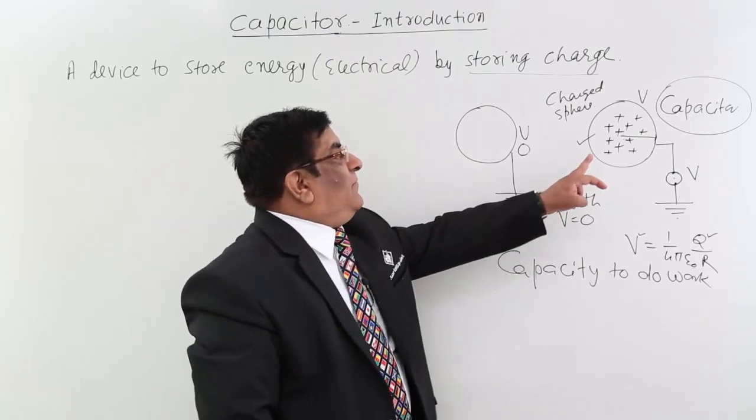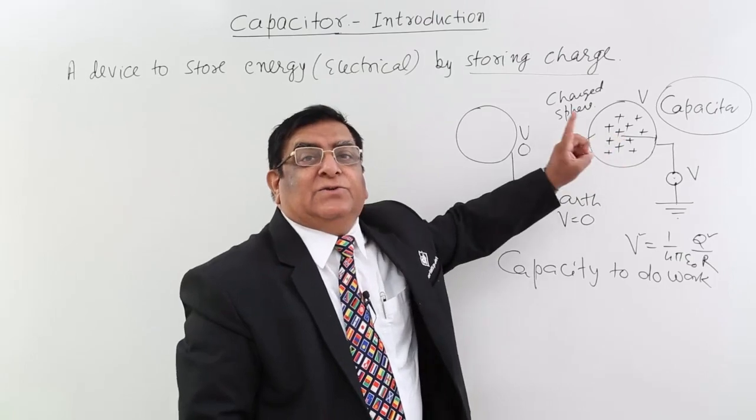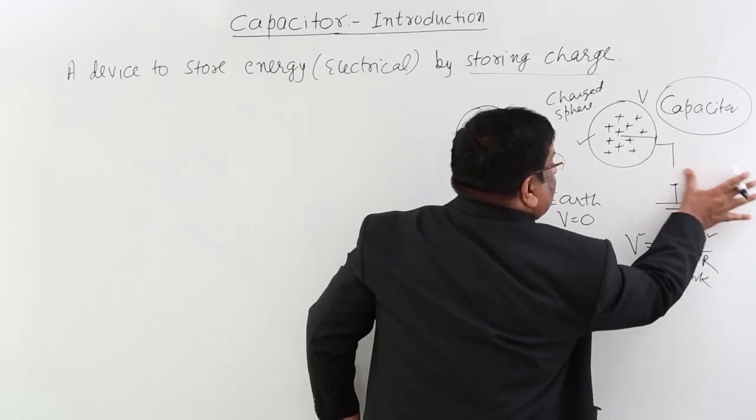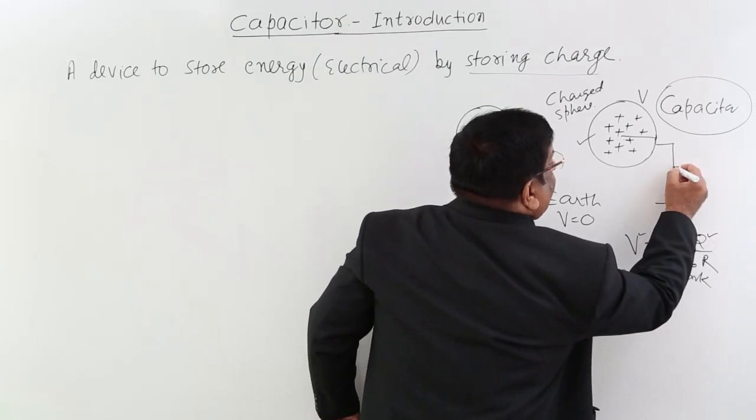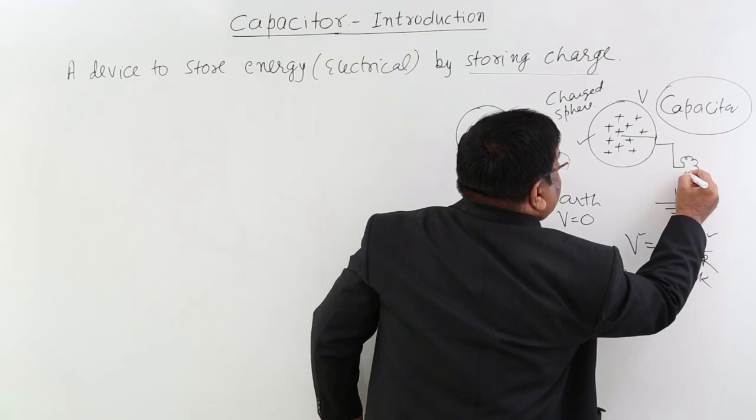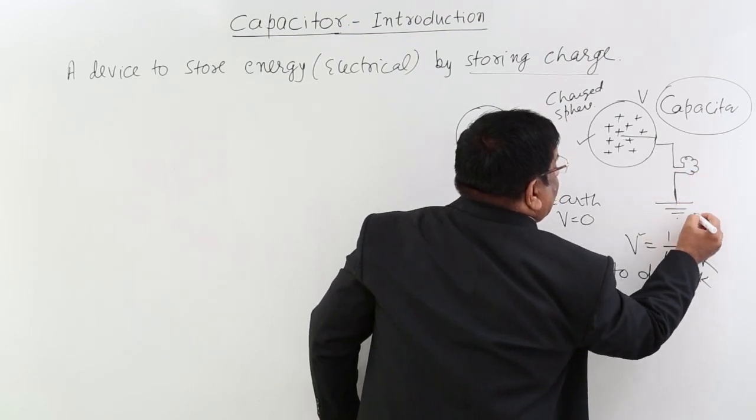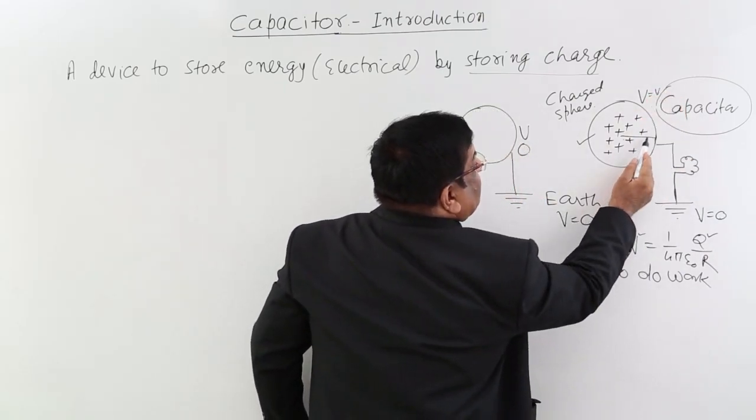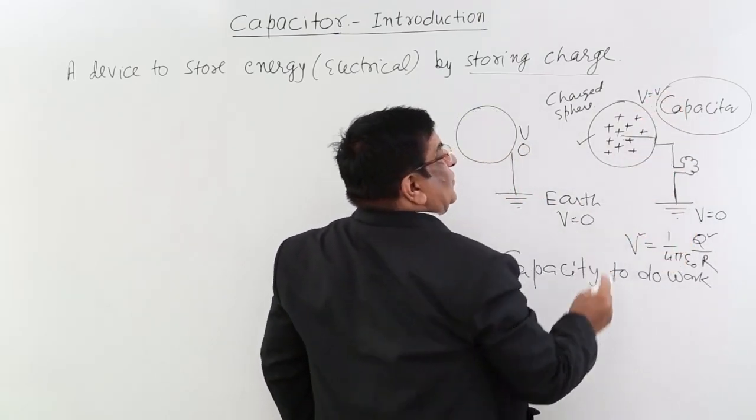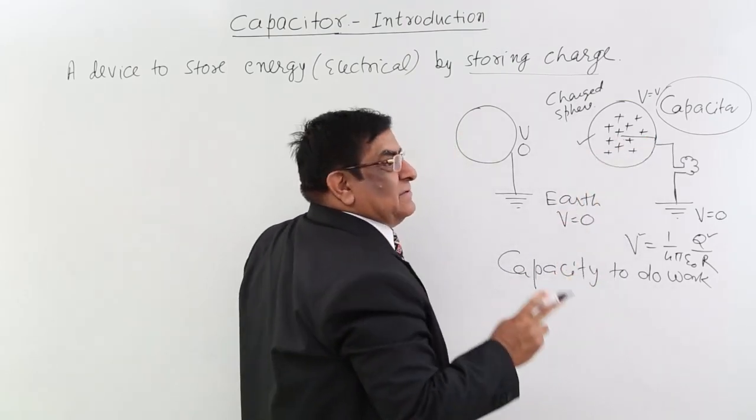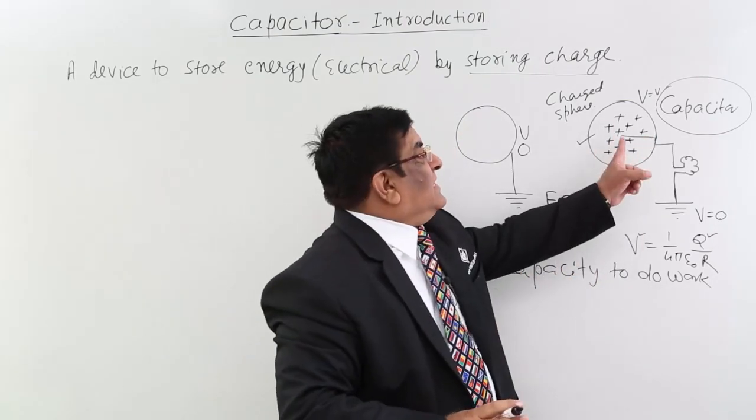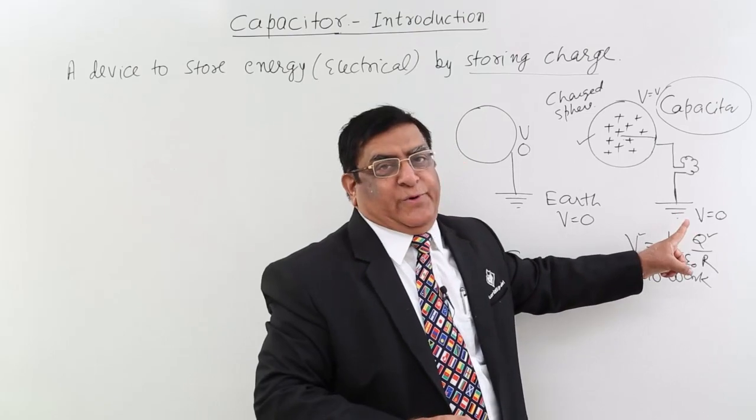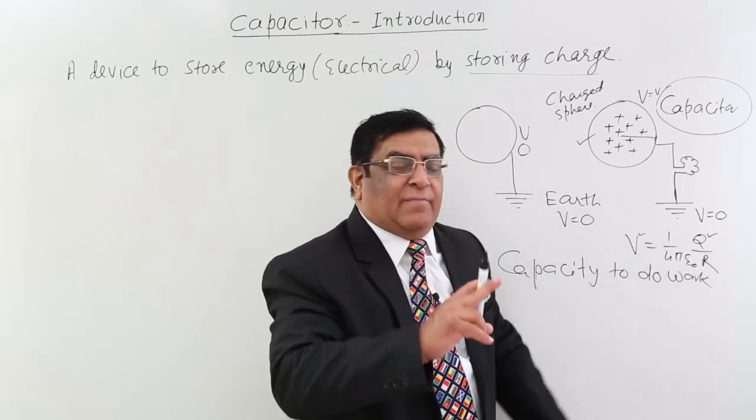So this way, now if I want it to work, to give back my energy, what I will do? Here I will put a bulb and connect it with the earth, which is V equal to 0. Its potential is V equal to V. This is high potential, this is low potential. And we have learnt, or remember it now, a charge, they will repel each other and they will flow from higher potential to lower potential.